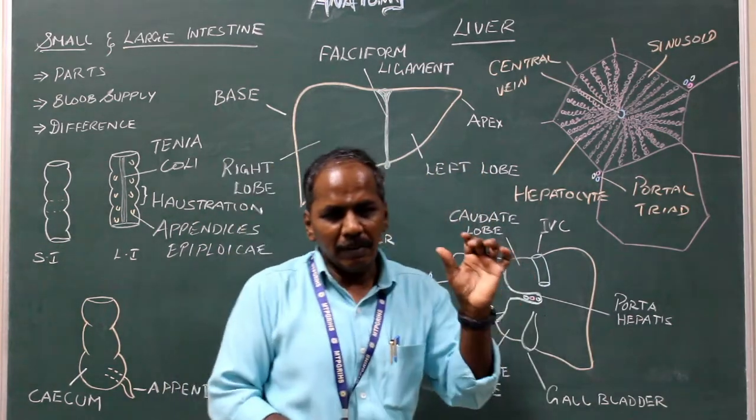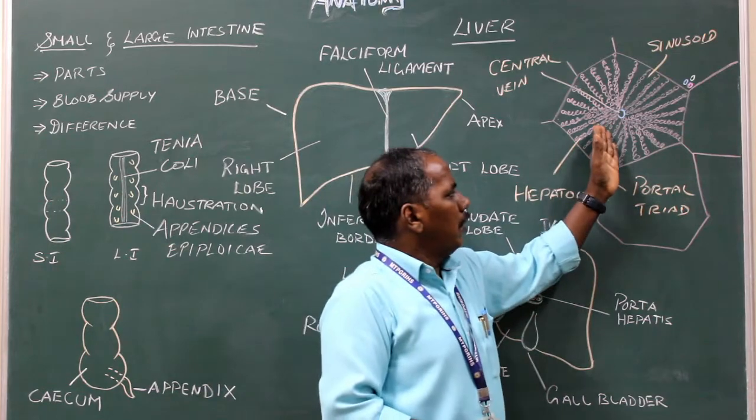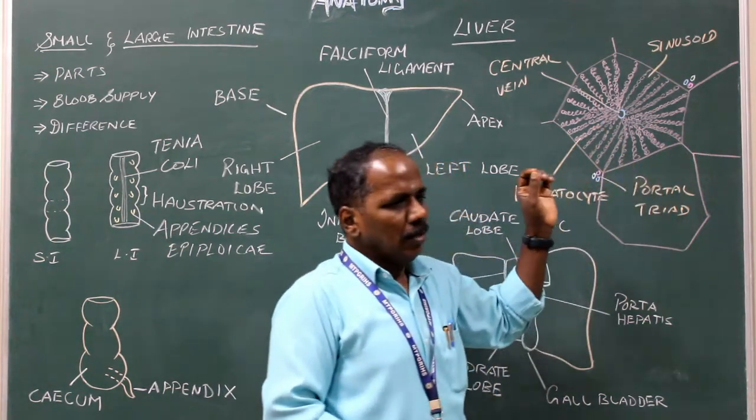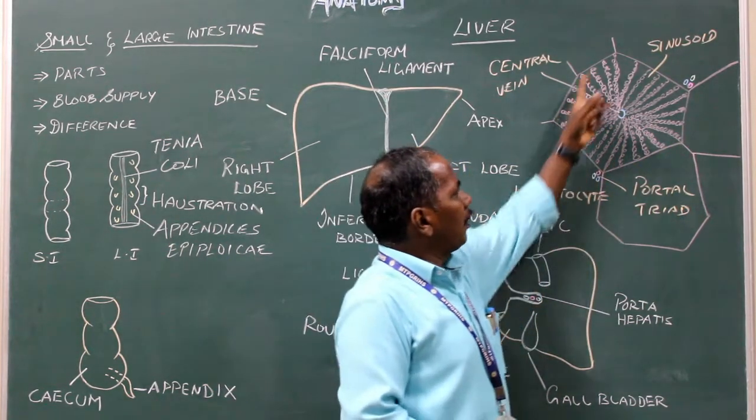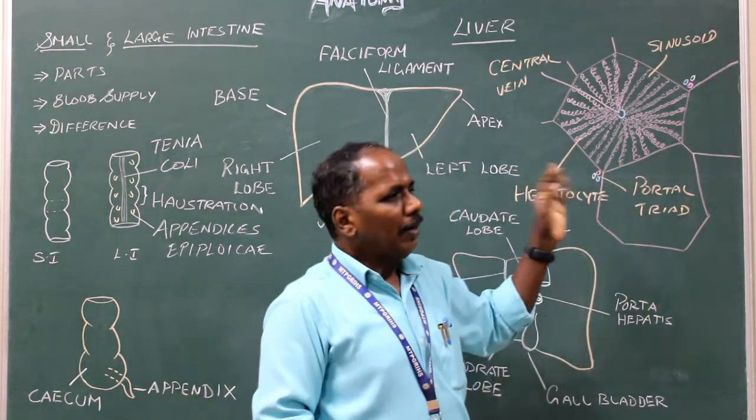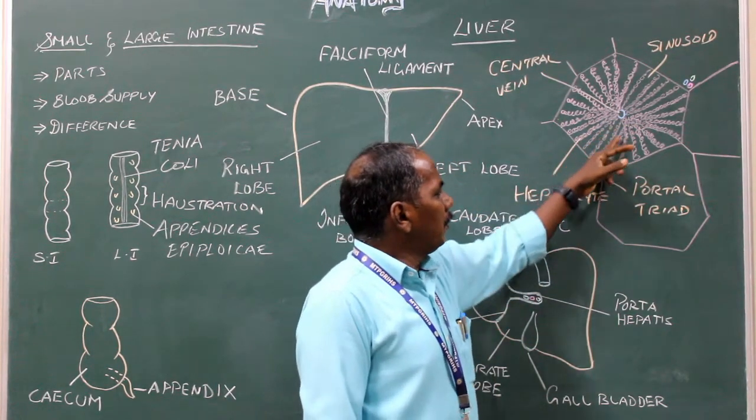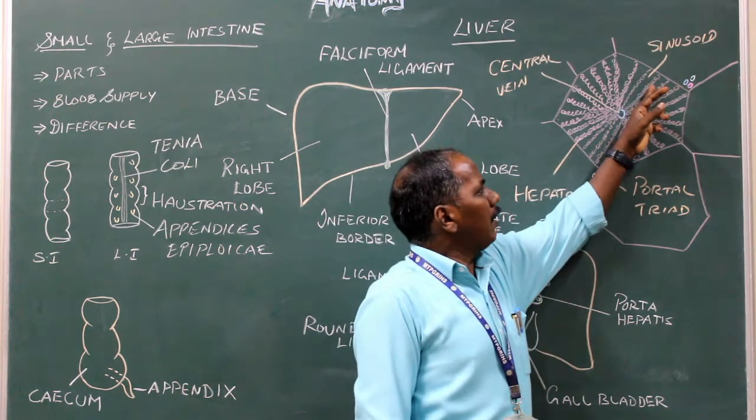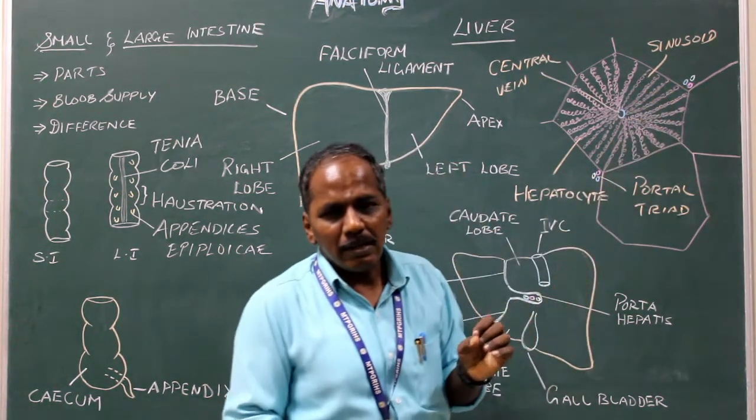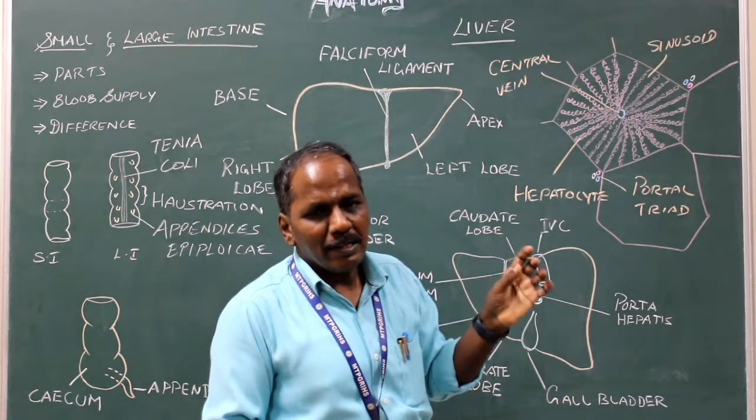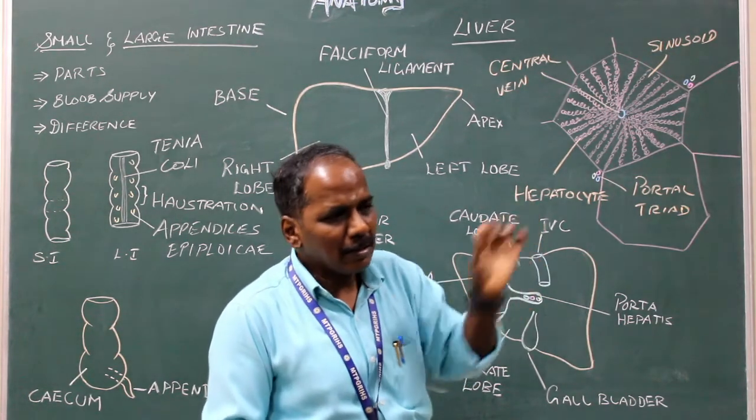Histology of liver: It has a number of lobules. Each lobe is hexagonal in shape. It has a central vein. From the central vein, there are numerous radiating sinusoids. The sinusoids are lined by liver cells, that is, hepatocytes arranged in cords.